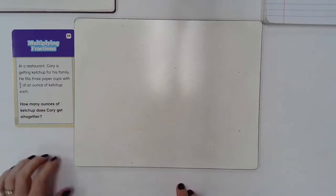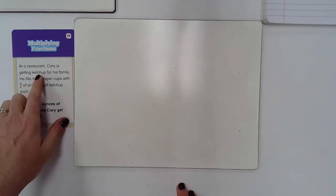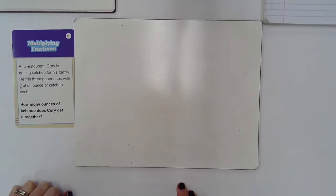So our first problem here: At a restaurant, Kerry is getting ketchup for his family. He fills three paper cups with five-sixths of an ounce of ketchup in each. How many ounces of ketchup does Kerry get all together?